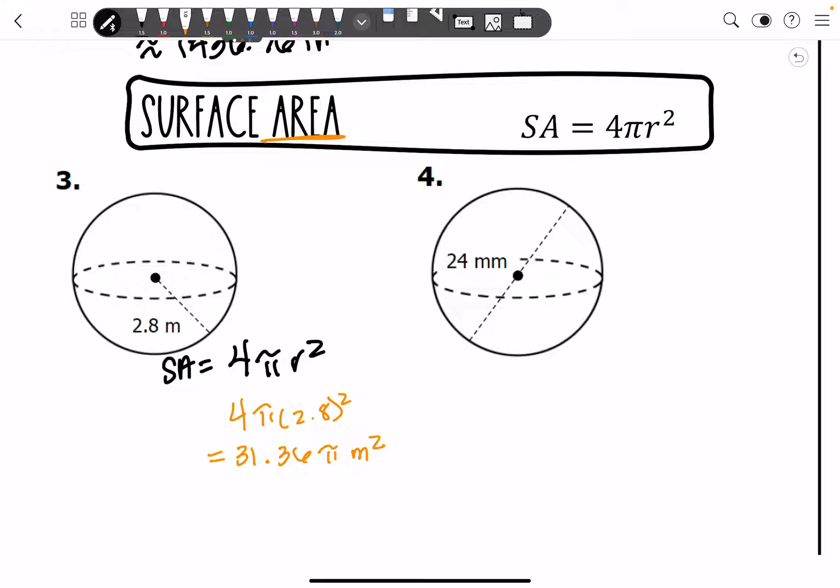Because remember, we're working with area. So P, A, V, 1, 2, 3. That's going to be my exact answer. My approximate is going to be 98.52 meters squared.